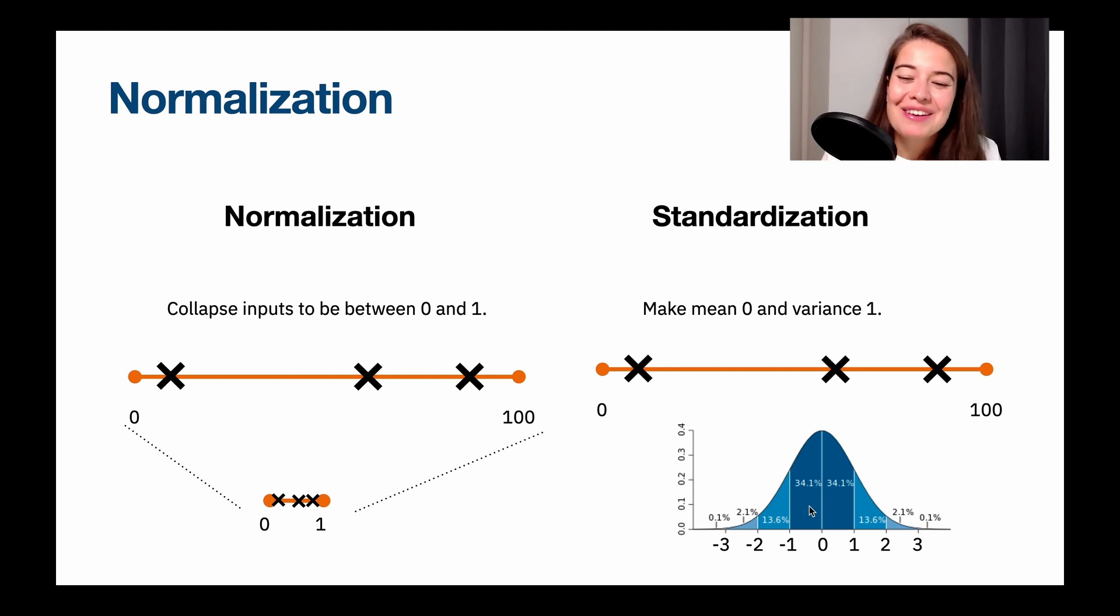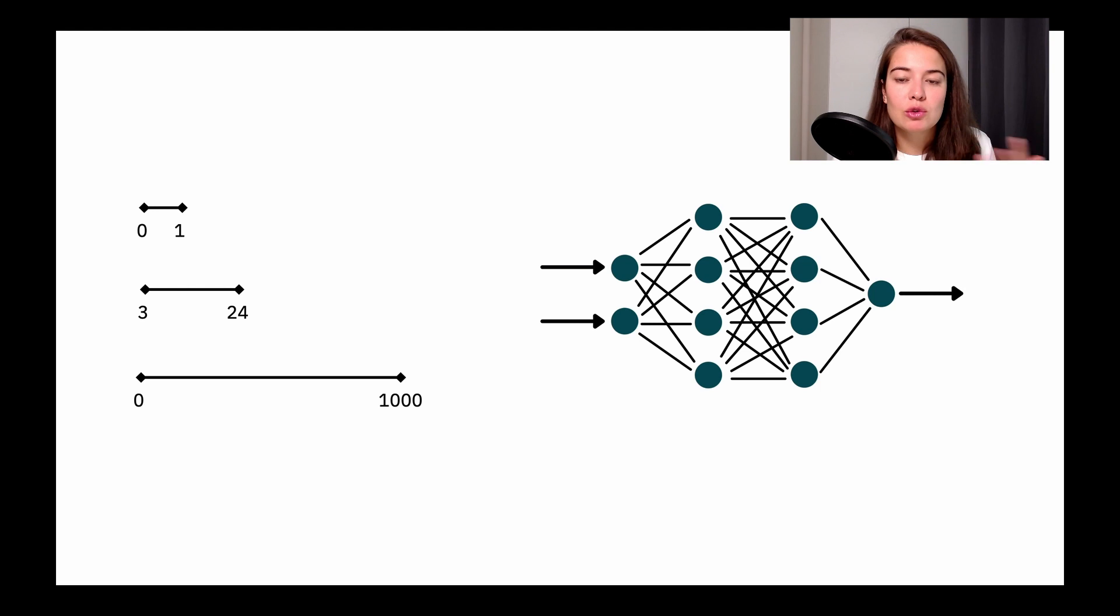So it might not be much, but the majority of the numbers will be between minus one and one, and then a little bit less of it is going to be between minus two and minus one and one and two. And as you go further, we're going to have less and less numbers. So given that we are doing a normal distribution, why do we do normalization?